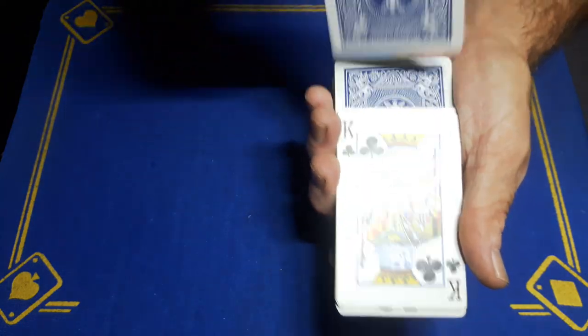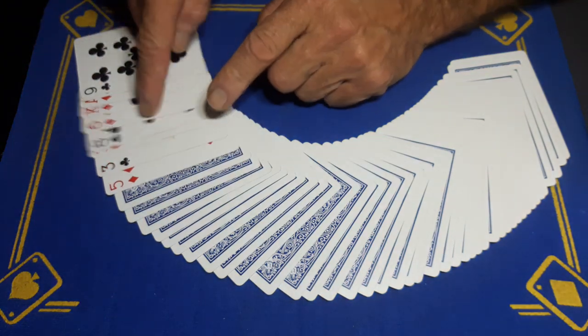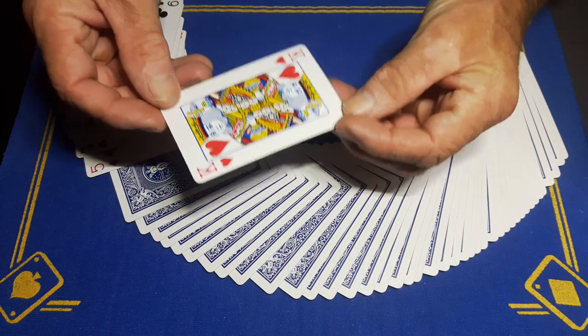As soon as they call out stop, square the deck and spread it, and say 'look, you could have had any of these cards, but you stopped me on this one card,' and it is the card they chose, the King of Hearts. So that's how you do it guys.